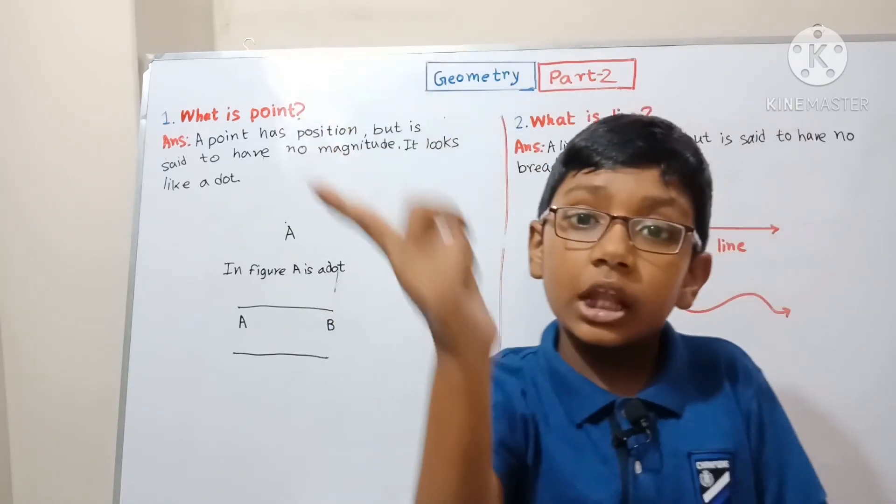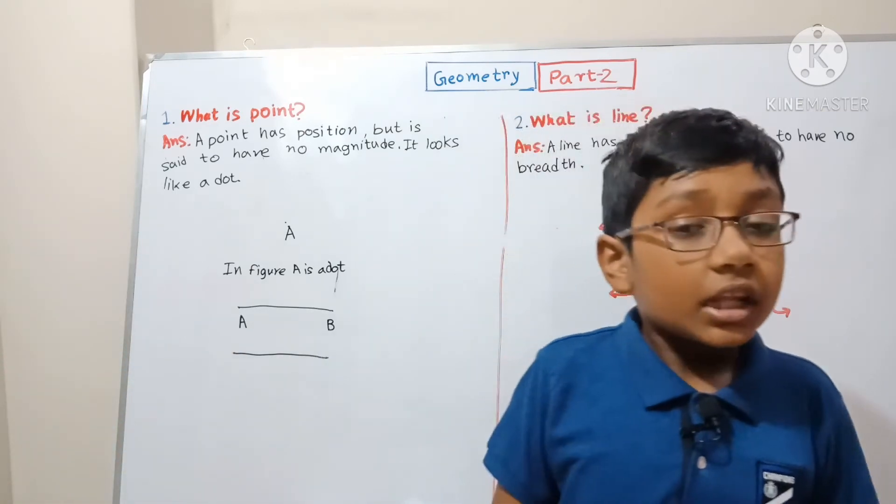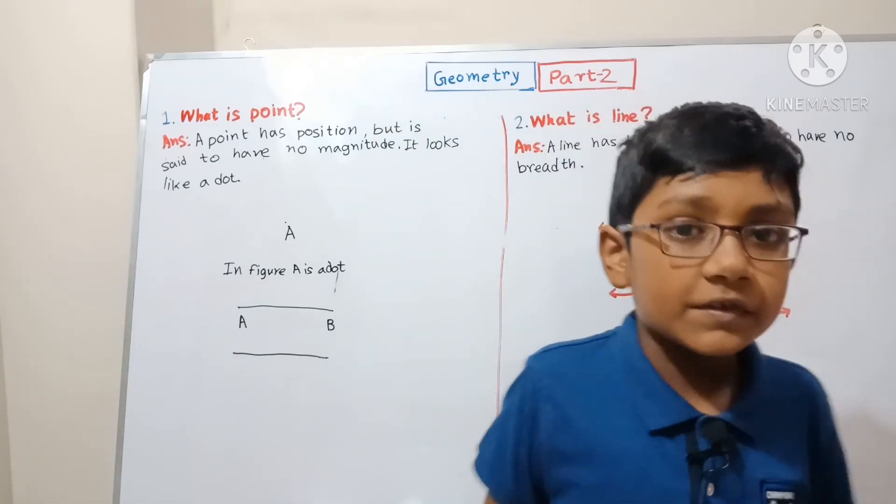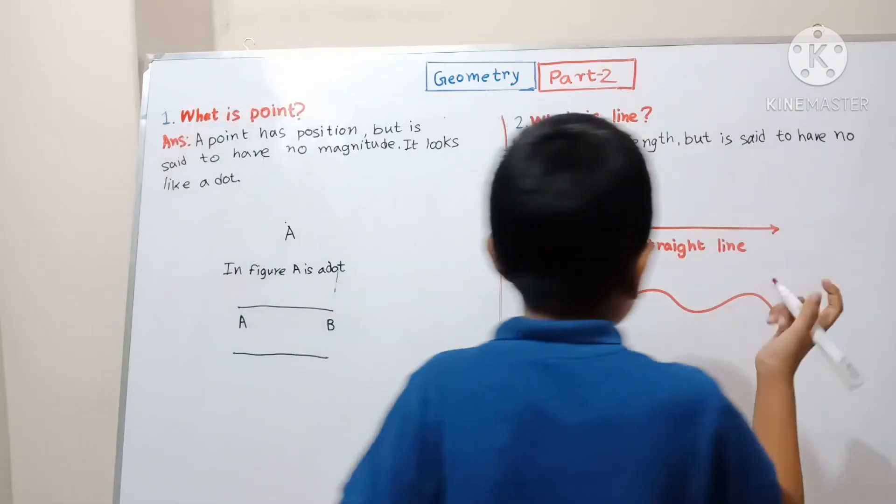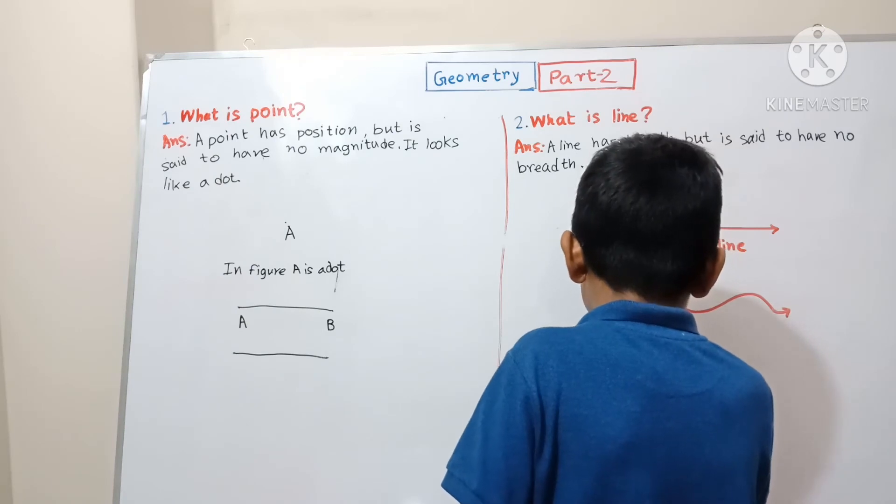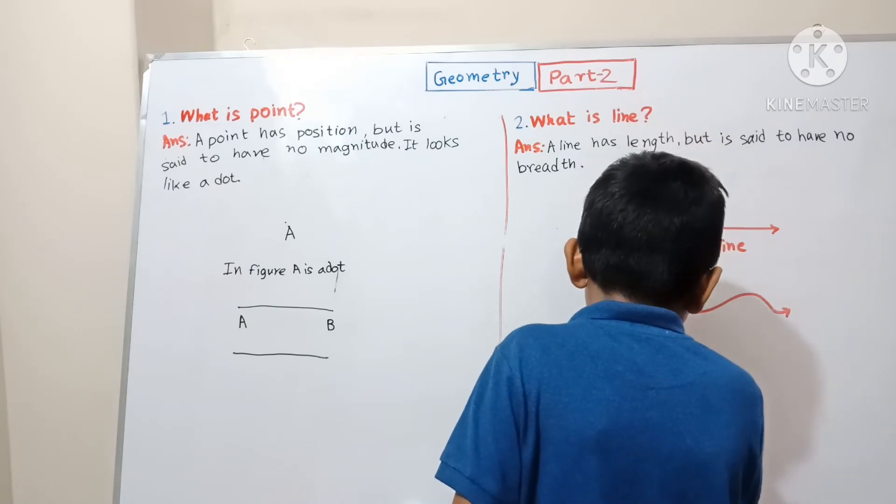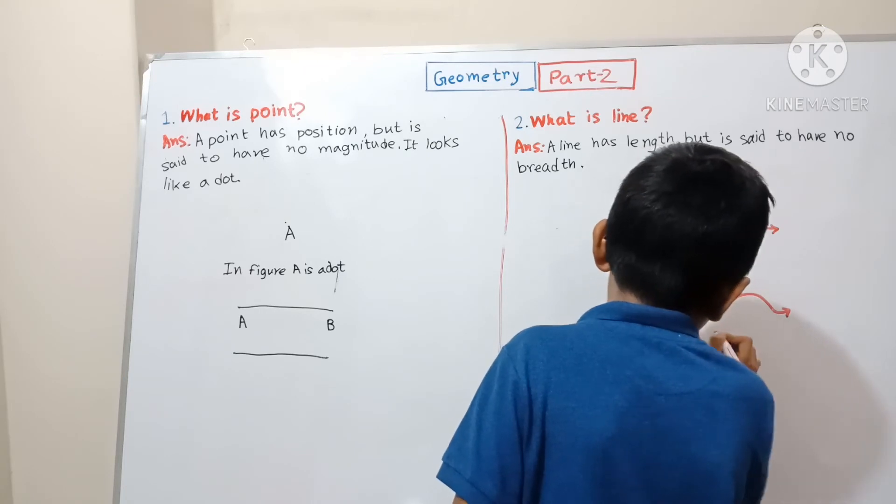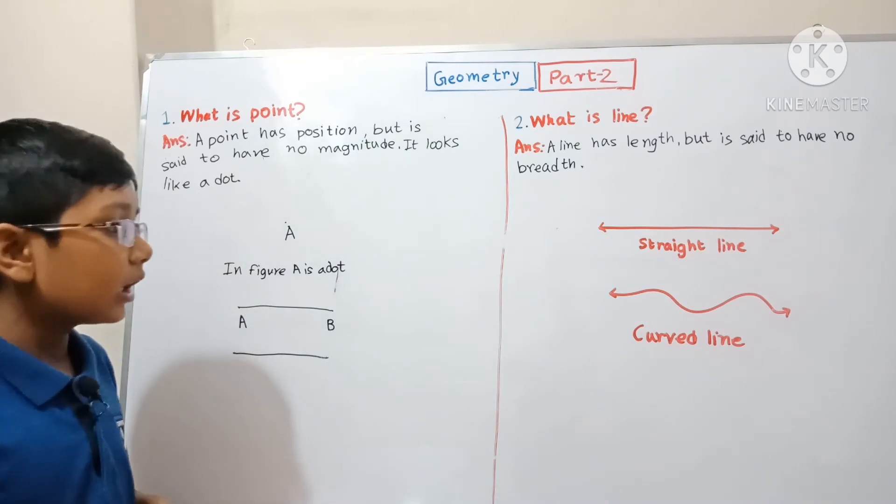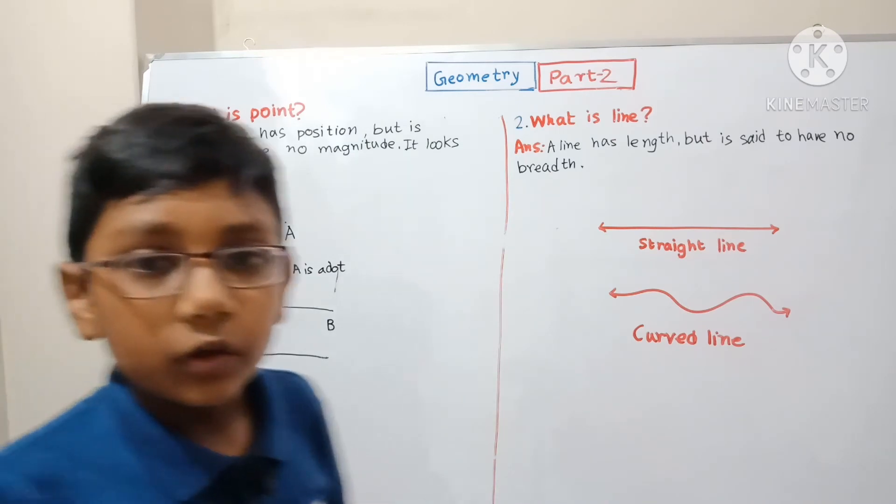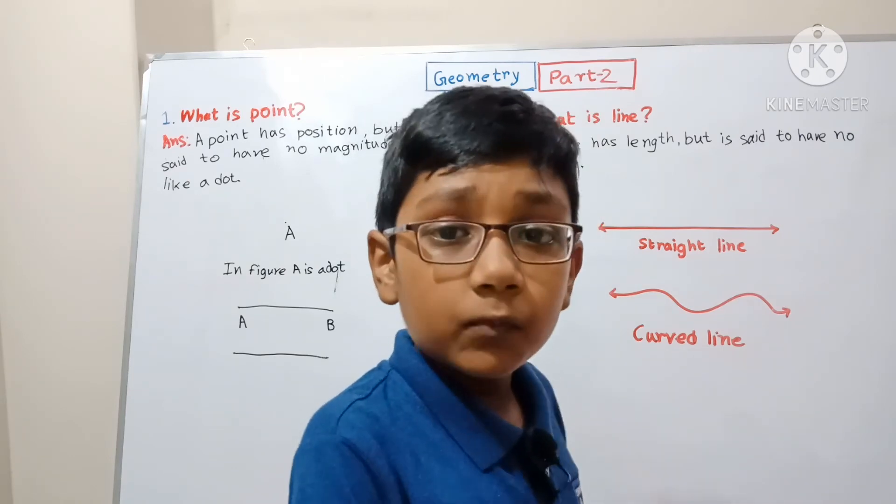Curved line is the opposite of a straight line. It changes its direction, wobbly like a carpet. Let me tell you the spelling: curved line.